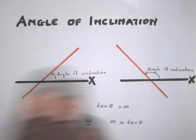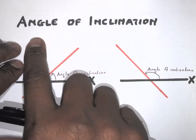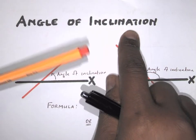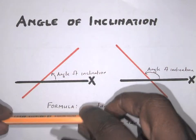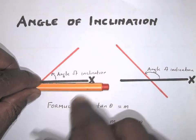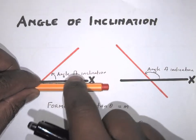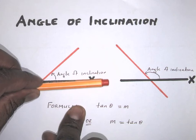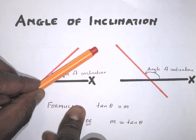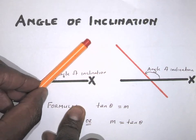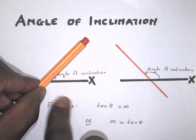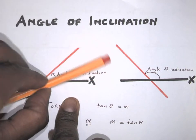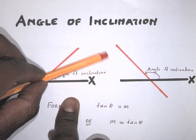Hi, Craig Levins. Today we are going to look at the angle of inclination. The angle of inclination, if we look at the x-axis, is an angle that any line will form when it is rotated about a point on the x-axis. So that angle formed as I rotate this pen is called the angle of inclination.